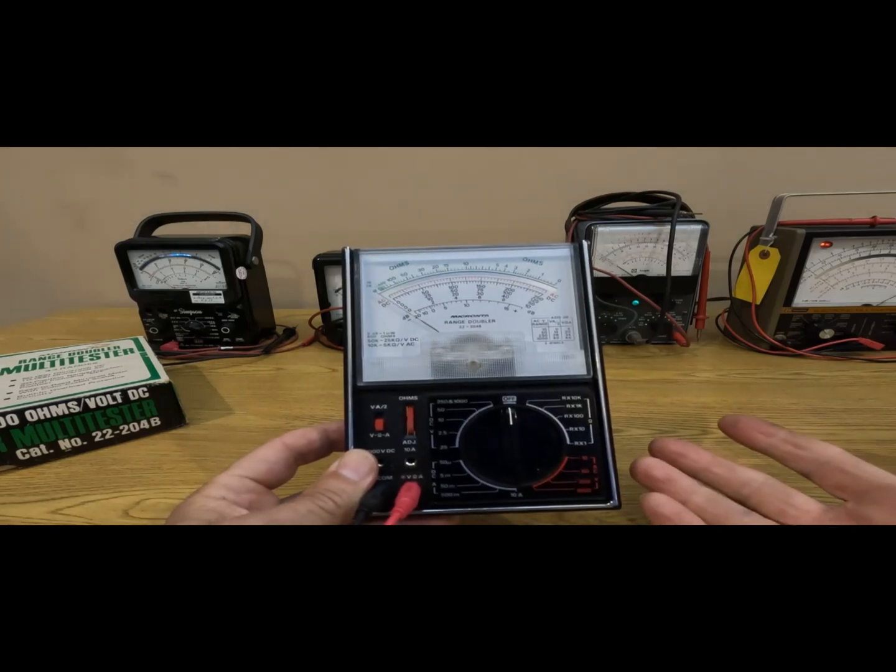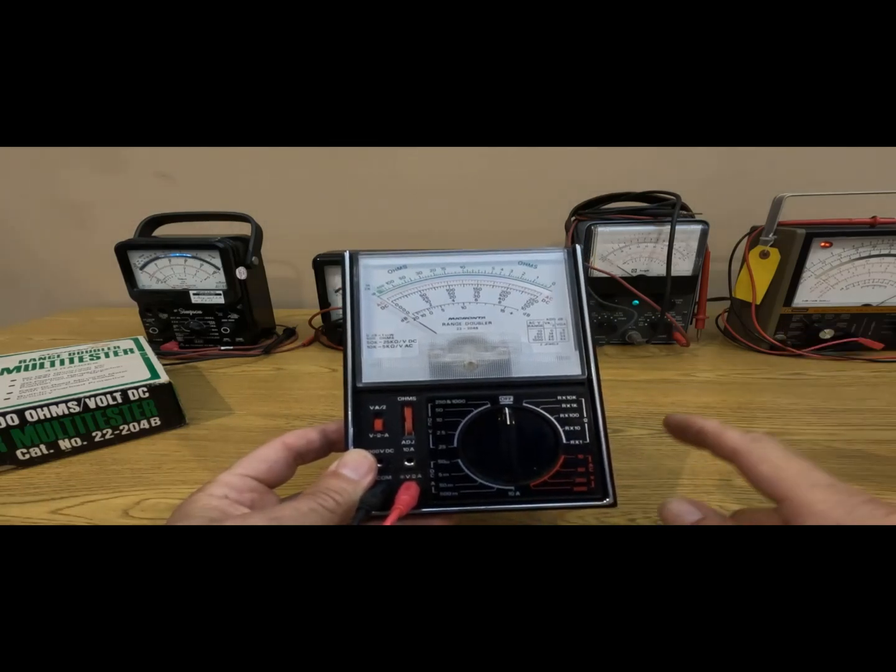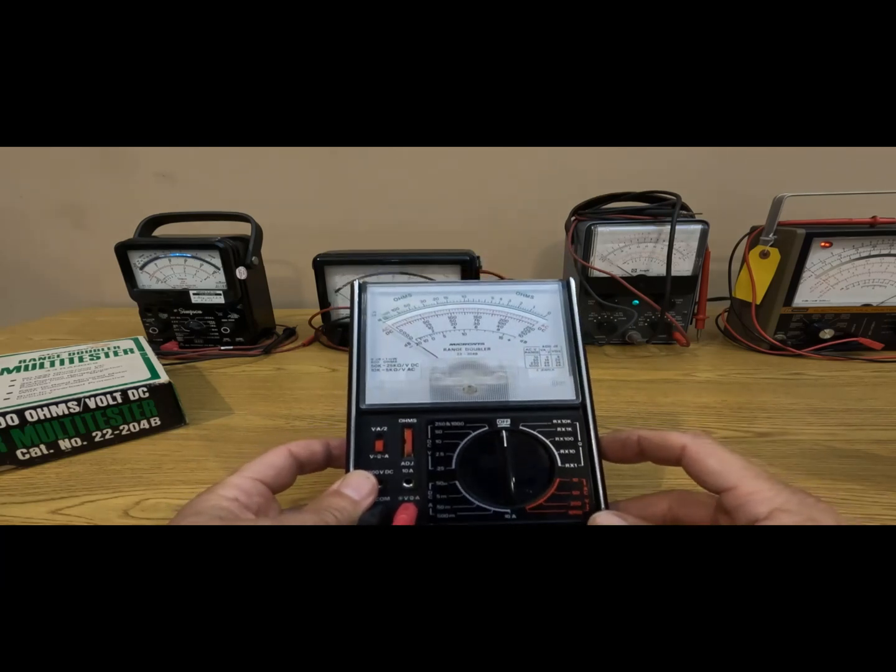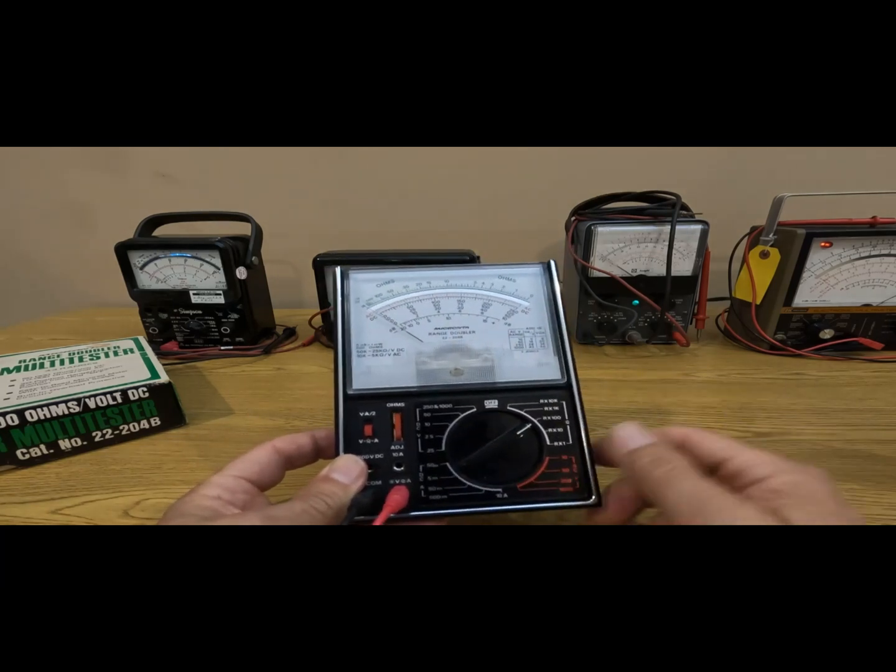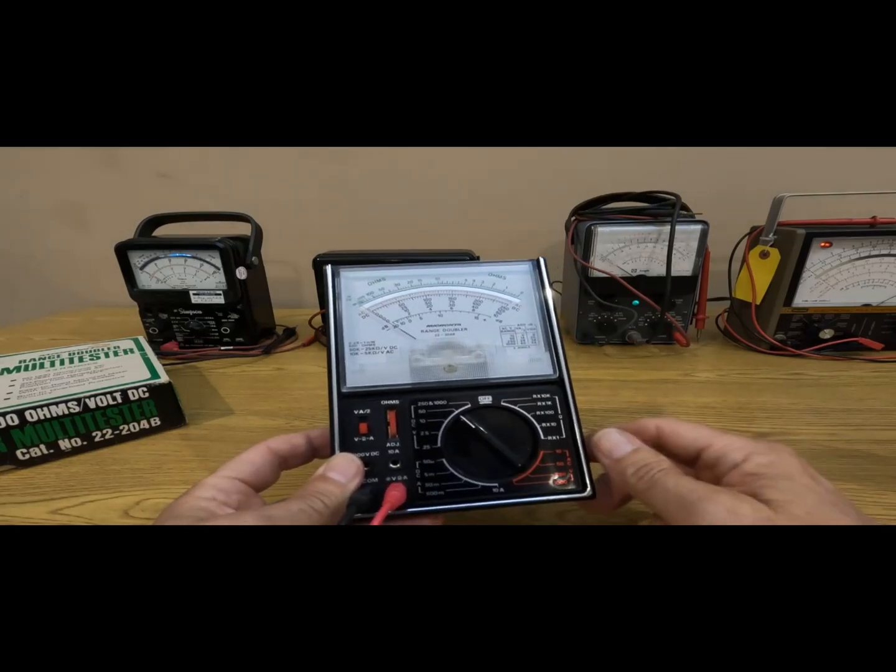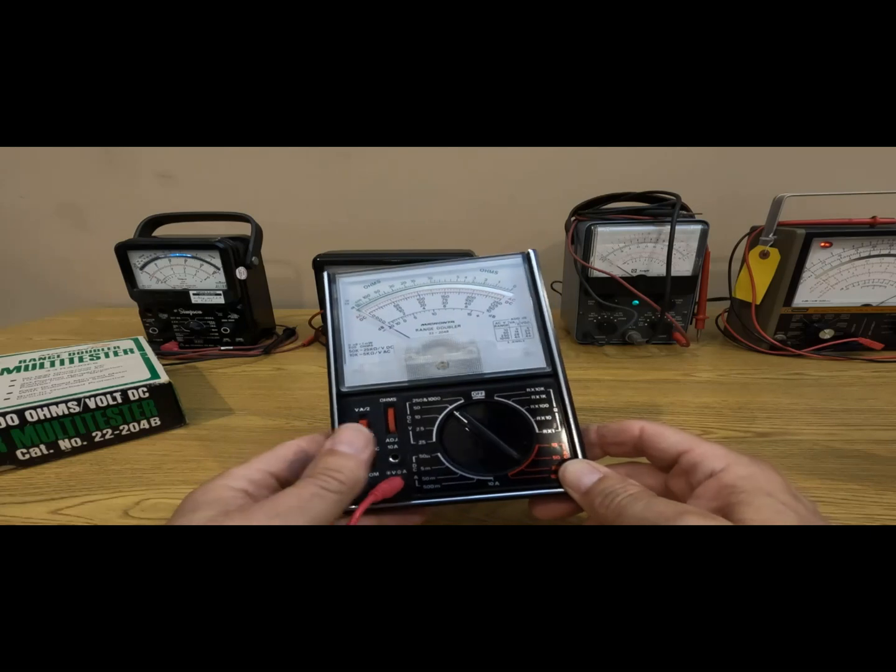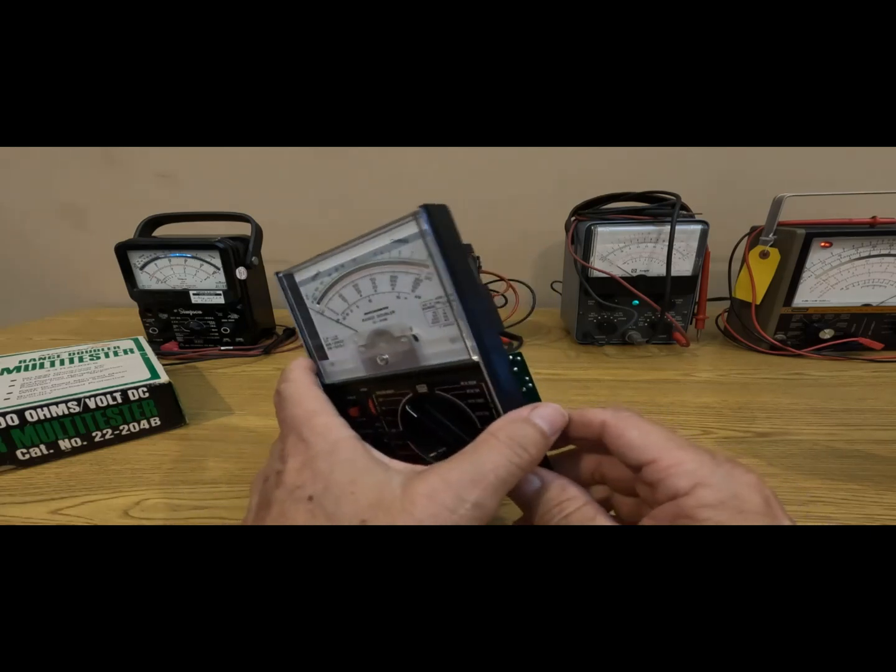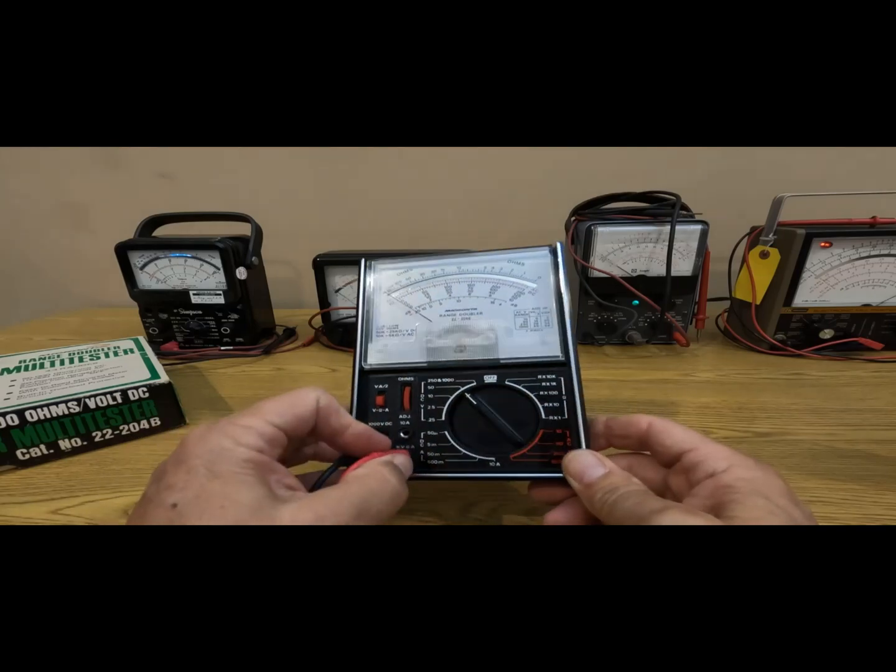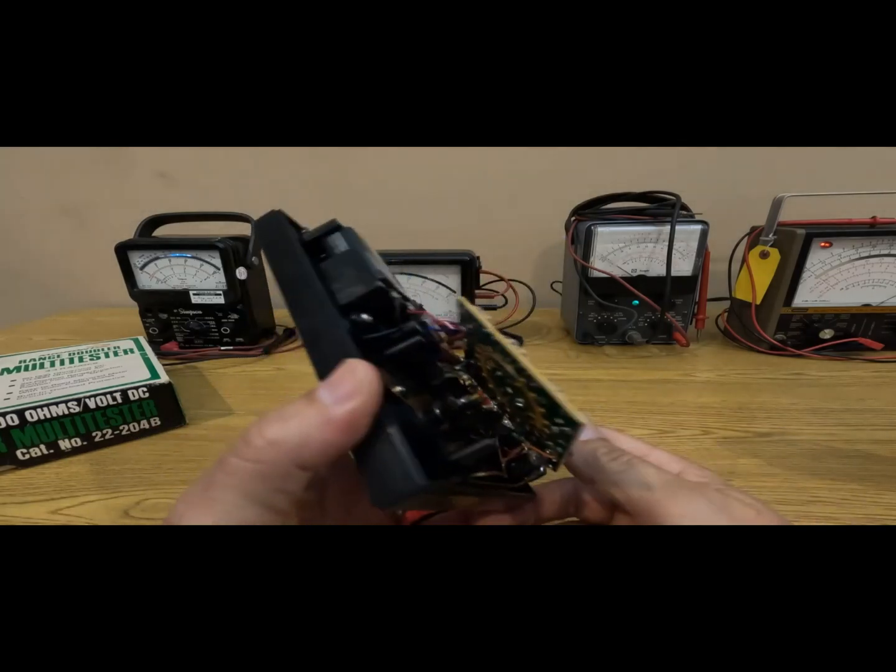At some point, I was helping a friend troubleshoot his car to see if his alternator was charging a 12-volt battery. I had it on ohms instead of volts. When I put the leads across the terminal of the battery, smoke came out. So I knew at that time that I had done some damage.